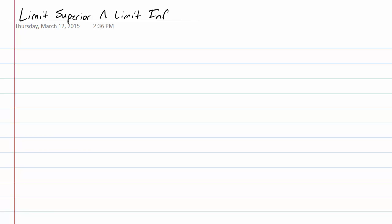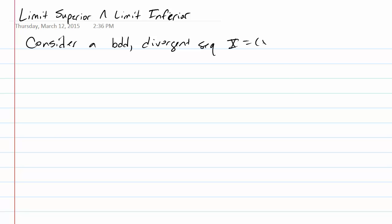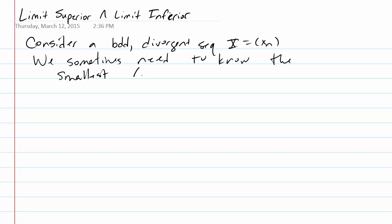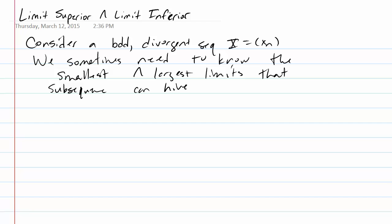In this short video I am going to go over the limit superior and limit inferior. The purpose is to do a better job of explaining the concept and how it relates to subsequences. We start off by considering a bounded but divergent sequence x = (x_n). We sometimes need to know the smallest and largest limits that a subsequence can have.